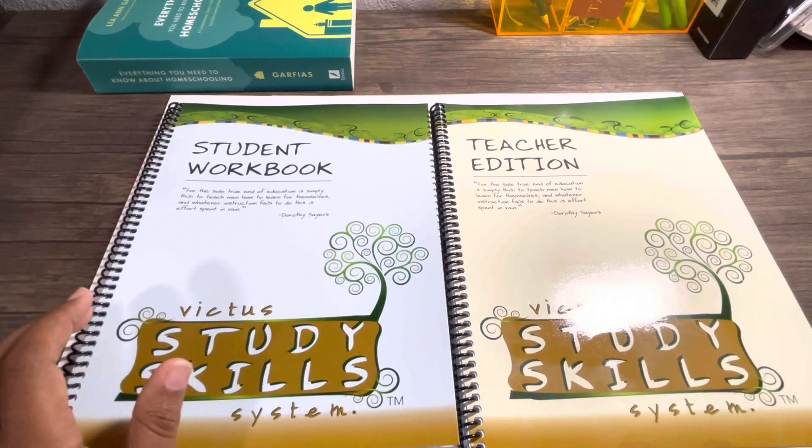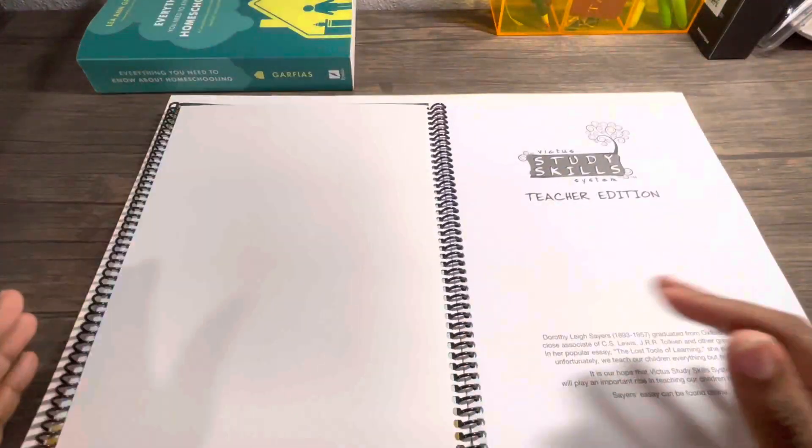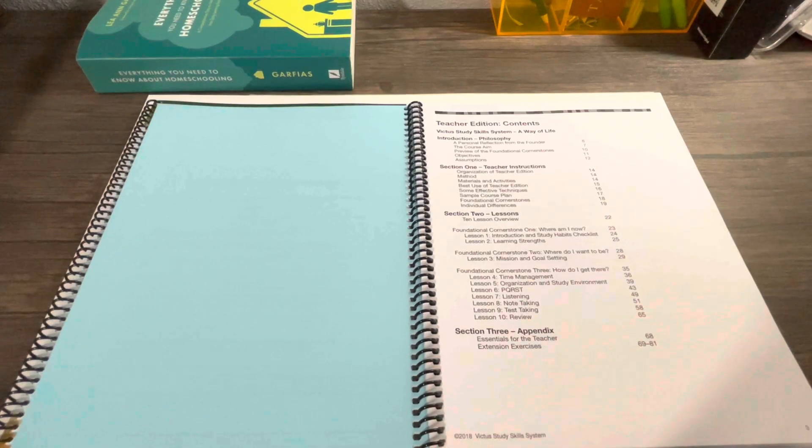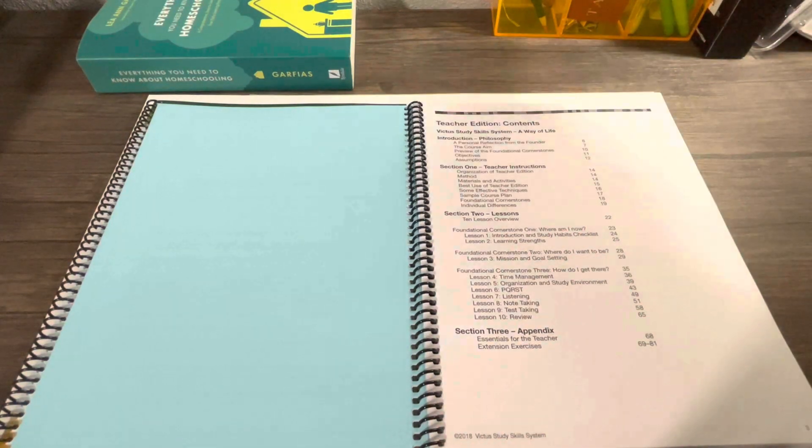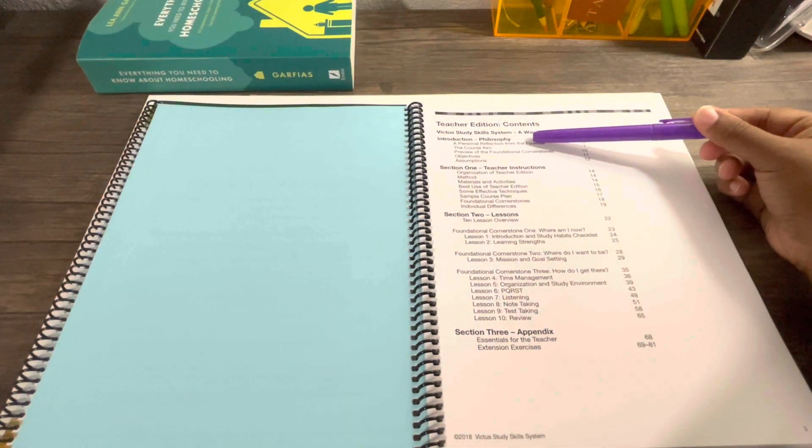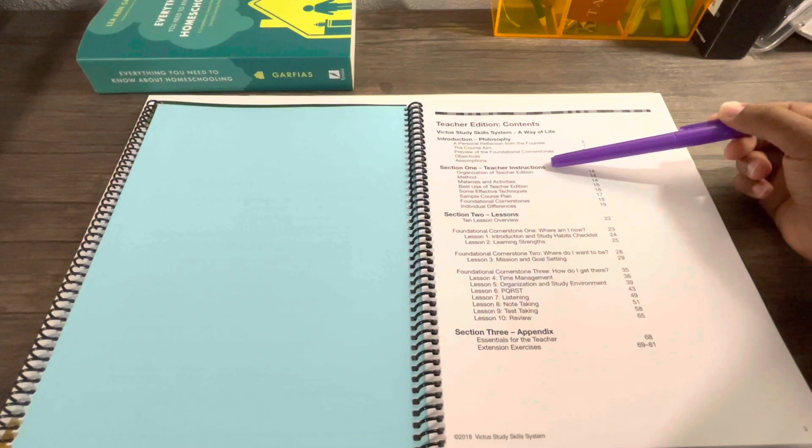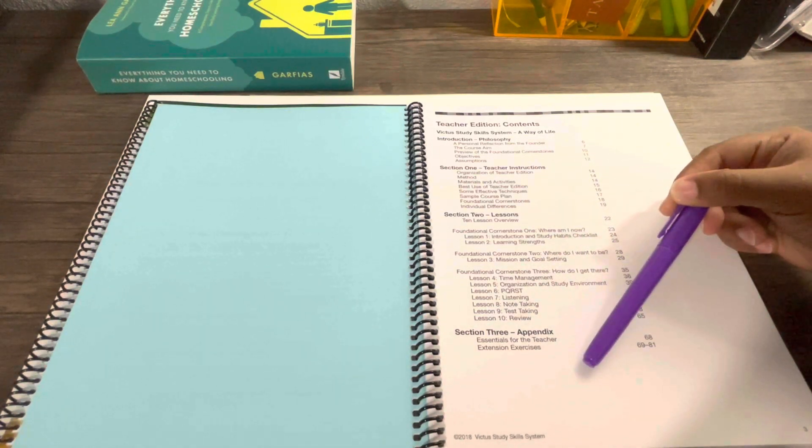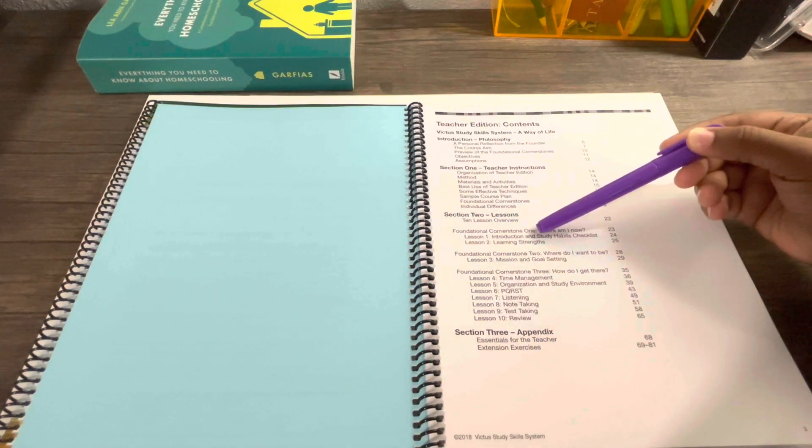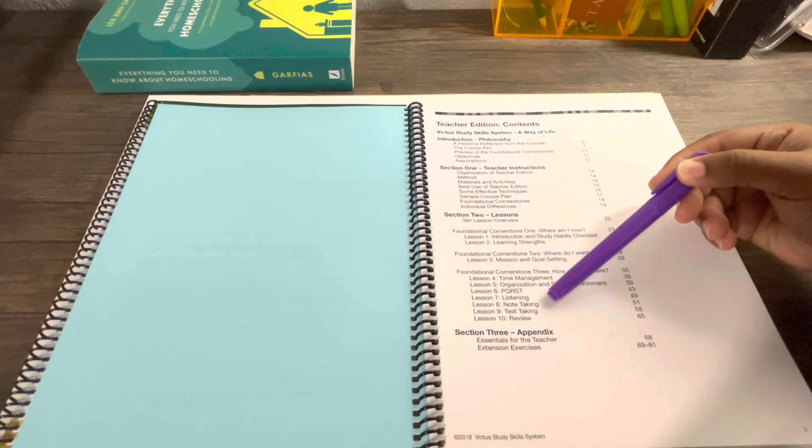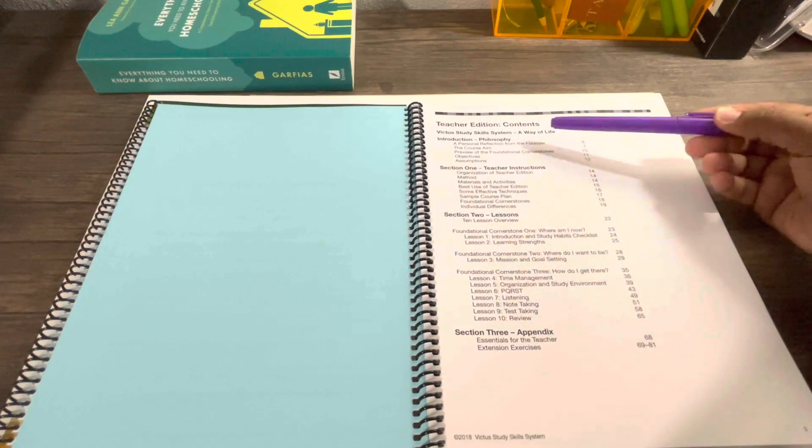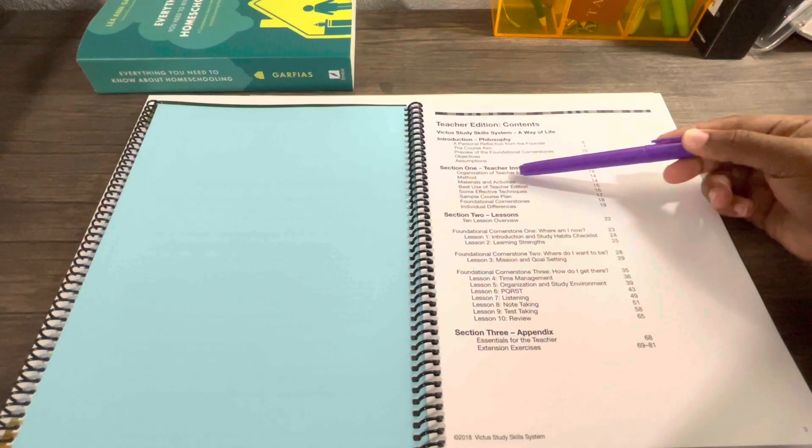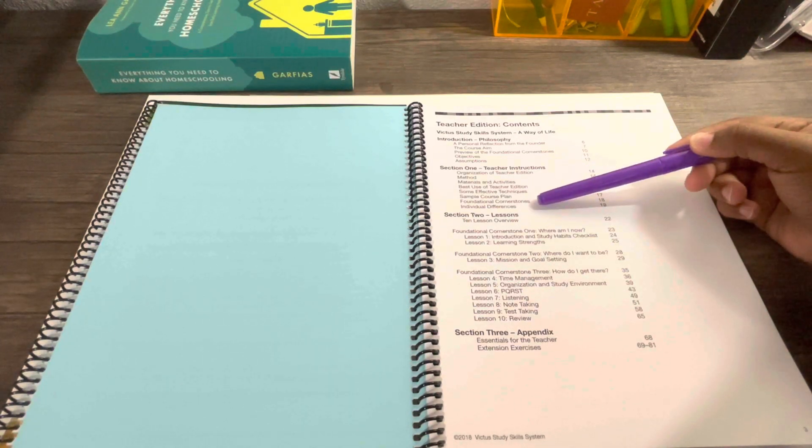Let's hop right inside. We're going to go into the teacher's edition. You have the introduction where it talks about the philosophy behind this. Section one is teacher's instructions, section two has all your lessons, and section three is the appendix.